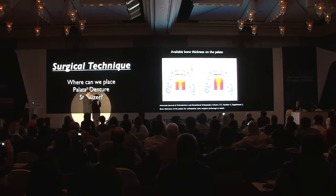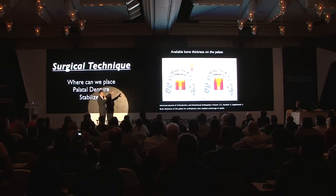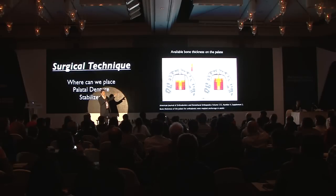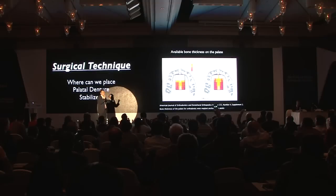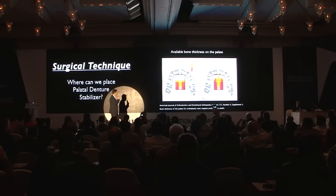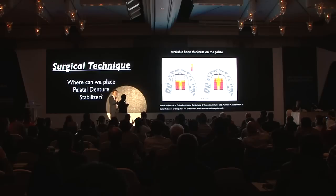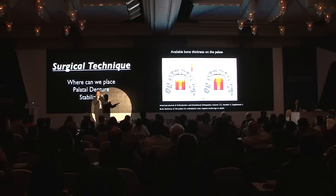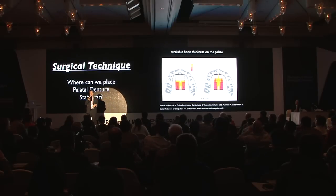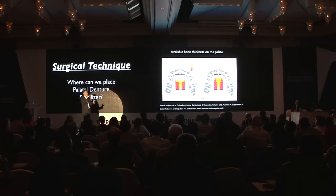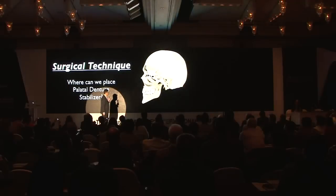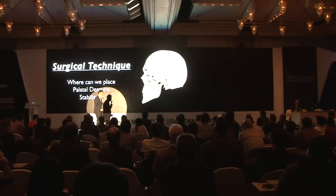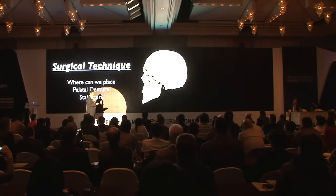According to a study published in an orthodontic journal, the areas with the most bone — greater than 6 mm of bone height — were found in the pre-maxillary region. So I recommend going into the pre-maxillary region to engage the maximum amount of bone. However, this article notes great inter-patient variability and recommends individual CT scans. If a CT scan is not available, I recommend going between the canine and first bicuspid region.